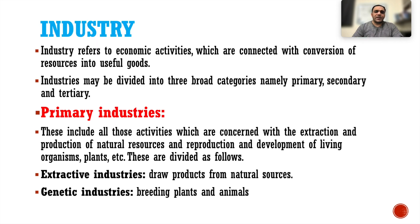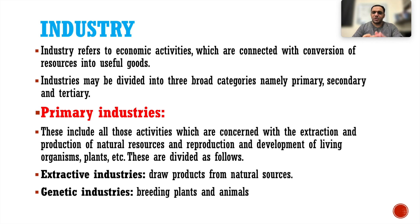Industry refers to the economic activities which are connected with the conversion of resources into useful goods. Industries may be divided into three broad categories: primary, secondary and tertiary. You might have heard about raw materials, natural resources, machinery and processing, and services — these three sectors are how they operate.